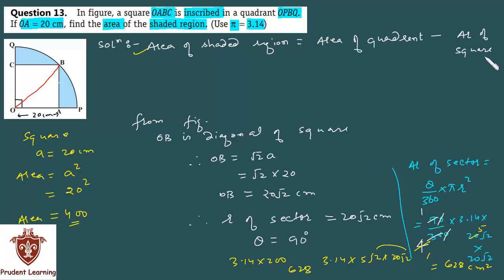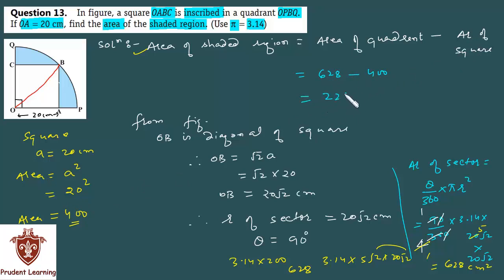अब आपके पास square का area भी है और quadrant (sector) का area भी find हो गया. Value substitute करते हैं: area of shaded region = area of quadrant − area of square = 628 − 400 = 228 cm². अच्छा question था — difficult नहीं था लेकिन ठीक था. This completes our solution. Let us see the 14th question of the same exercise.